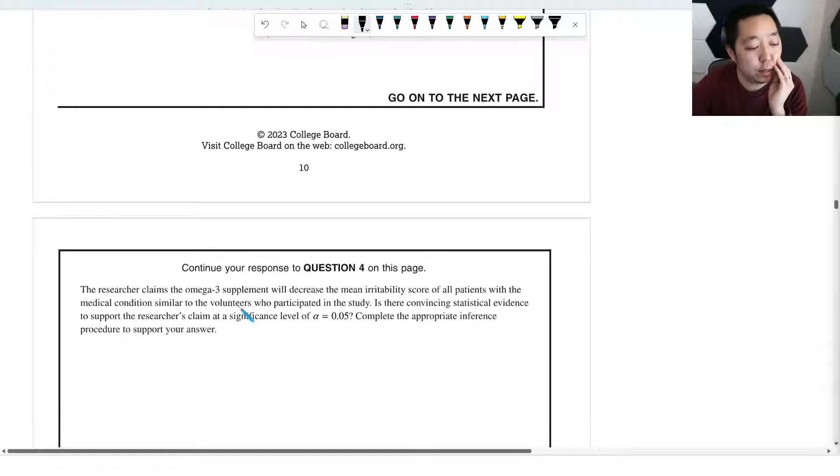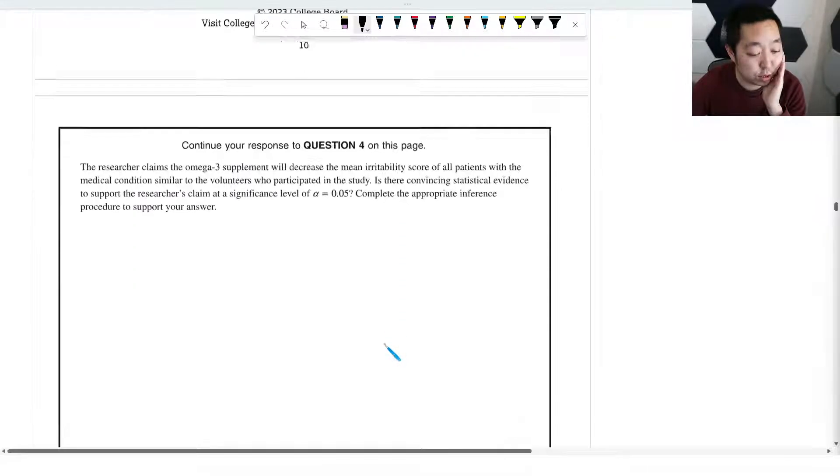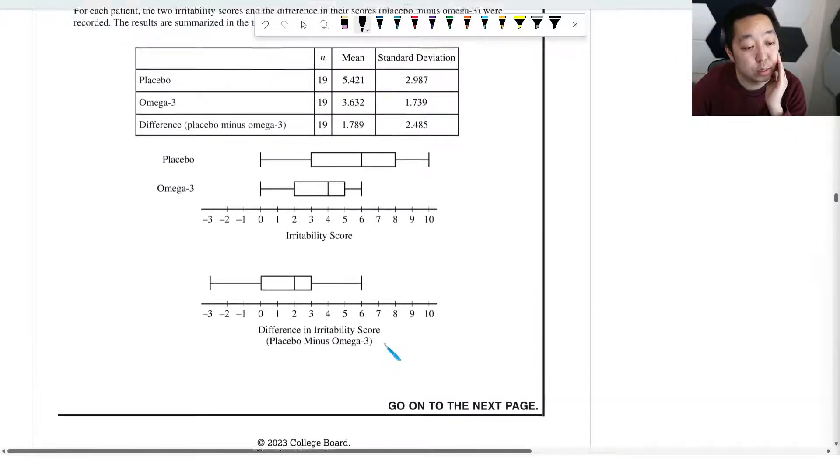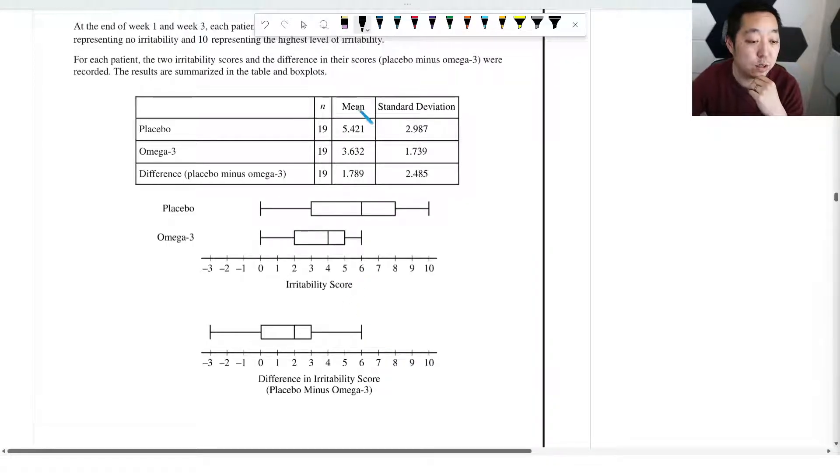The researchers claim that the omega-3 supplement will decrease the mean irritability score of all patients with medical conditions. Is there convincing statistical evidence to support the research claim at significant level alpha equals 0.05? We have mean, standard deviations, and we're going to be focusing on the differences.